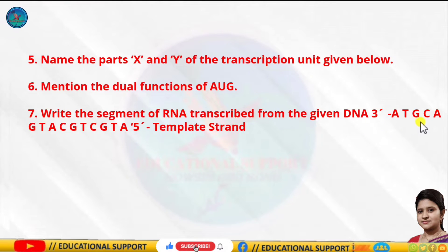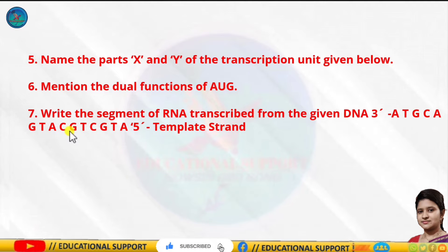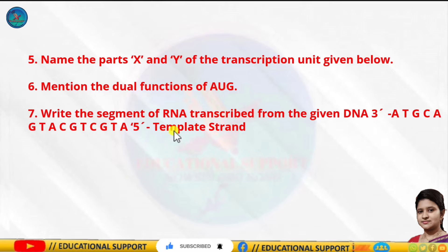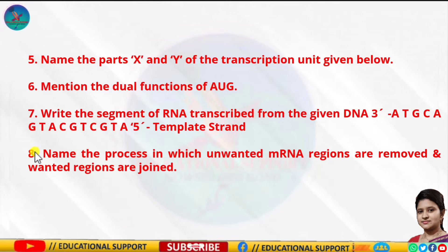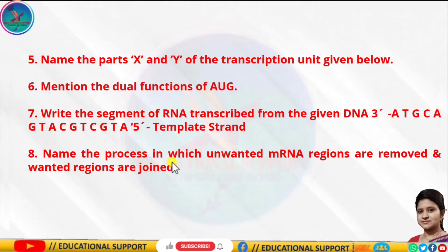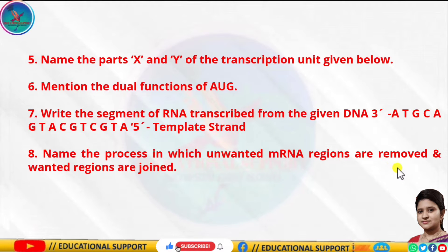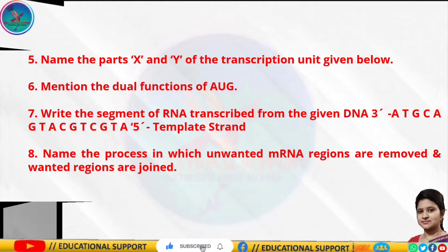ATGCAGTACGTA 5′ template strand. Question number eight: name the process in which unwanted intron regions are removed and the wanted exon regions are joined.